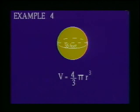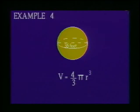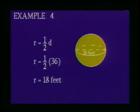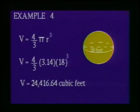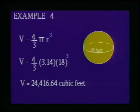Example 4: A spherical water tank has an inside diameter of 36 feet. Determine the volume of water that the tank will hold. Because the formula for the volume of a sphere, V = four-thirds times pi times r³, is given in terms of the radius, the first step is to find the radius. The radius is one-half the diameter, so the radius is one-half of 36, which is 18 feet. Using 3.14 as the approximation for pi and substituting 18 for r, we solve the equation and find that the volume of water held by the spherical tank is 24,416.64 cubic feet.